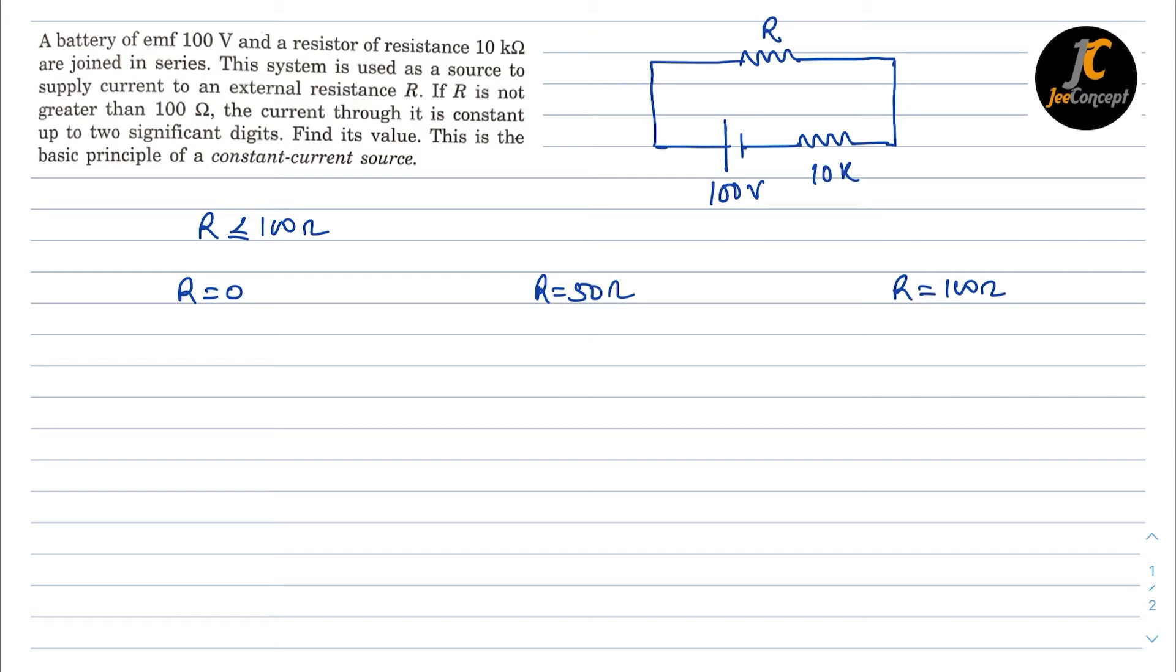So the first scenario, the R equivalent is going to be 10 kΩ, that means 10,000 Ω. The voltage is 100 volt. So that means the current I is going to be V by R, or I can say 0.01 A.